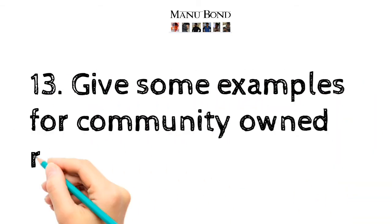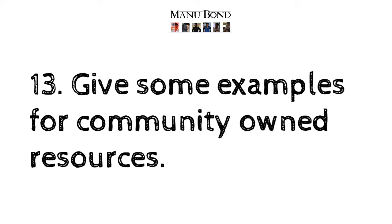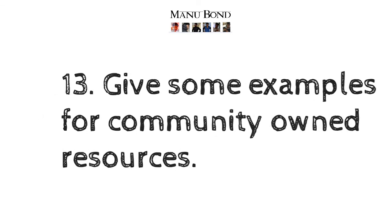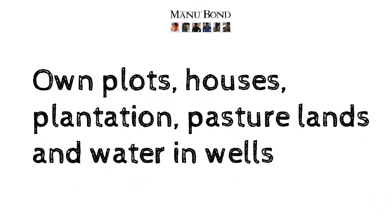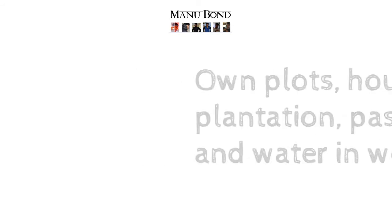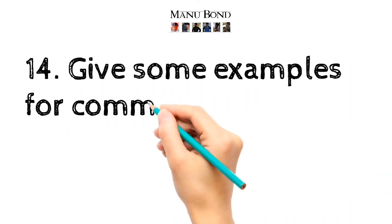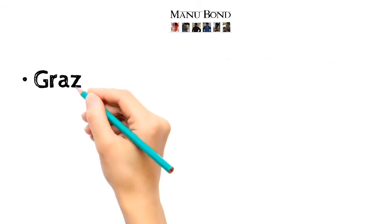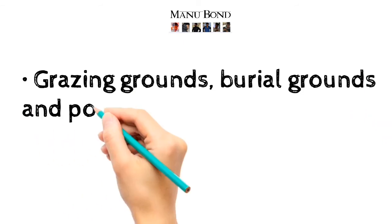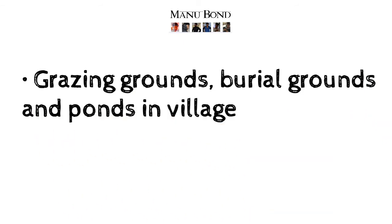Question number 13: Give some examples of individual owned resources. Answer: Own plots, houses, plantation, pasture lands, and water in wells. Question number 14: Give some examples of community owned resources. Answer: Grazing grounds, burial grounds, and ponds in a village.